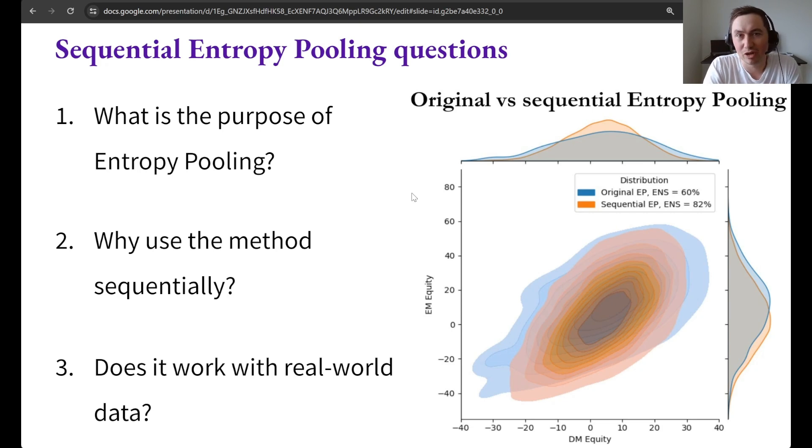So in usual Bayesian updating you have a prior and then you get some data and then you get the posterior. With entropy pooling it's actually much more flexible than that where you just input the views about the posterior distribution.